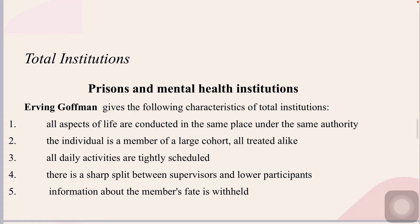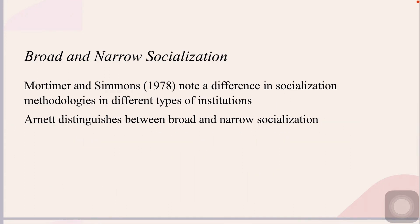The goal of the total institution is to facilitate a complete break with one's whole life in order for the institution to re-socialize the individual. A noted difference in socialization methodology exists in different types of institutions. When the goal of an institution is socialization — either primary or secondary — the institution tends to use normative pressures. When the goal of an institution is re-socialization of deviant individuals, coercion is frequently involved.